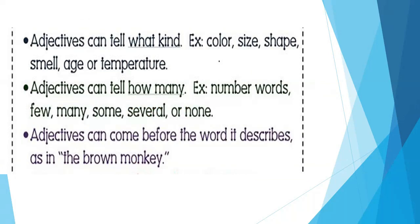Adjectives can tell what kind — for example: color, size, shape, smell, age, or temperature. Adjectives can tell how many — for example: number words like few, many, some, several, or none. Adjectives can come before the word they describe, as in the brown monkey — monkey is a noun and brown is an adjective.